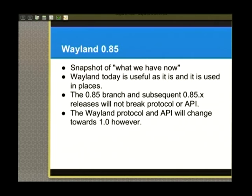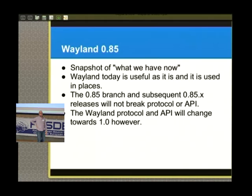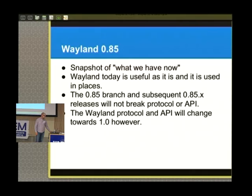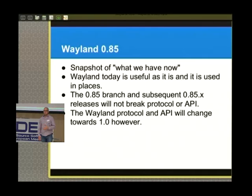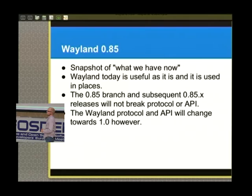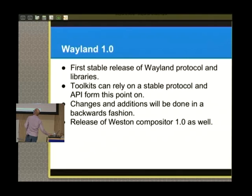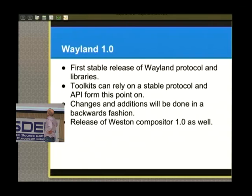The thing is, Wayland as it is now is actually used in different projects — more than I know of. With 0.85 we're making a snapshot because it's useful as-is; we'll maintain a stable branch for what we have now even as we continue to break the API on the main branch. The idea: 0.85 is a stable snapshot, 0.9 are the beta releases, and at 1.0 we commit to the protocol — this is done.